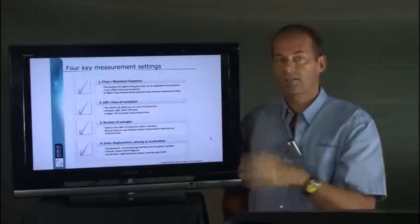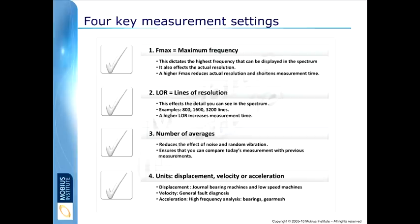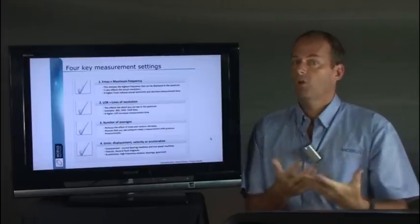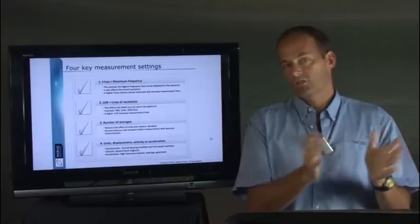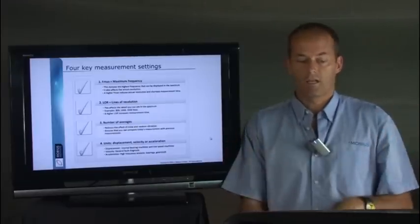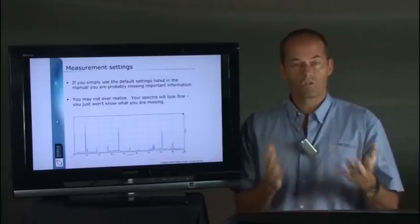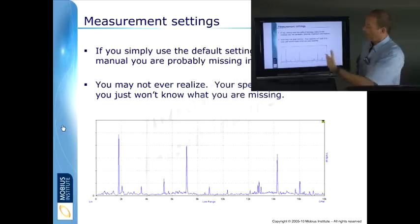And finally with the units, it used to be always a very simple question. If you're dealing with machines with proximity probes or eddy current non-contact displacement sensors, you would use displacement, and for everything else we would use velocity. There's a history behind that. The bottom line is that these days you should consider with a lower frequency measurement looking at velocity and a higher frequency measurement looking at acceleration.